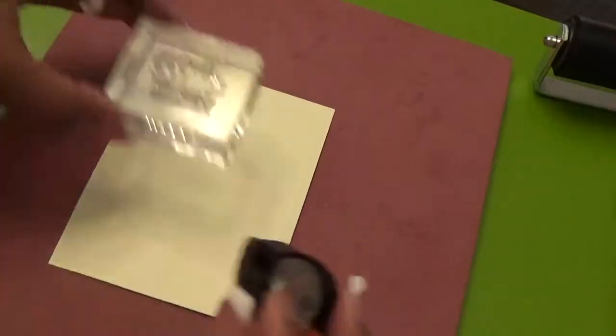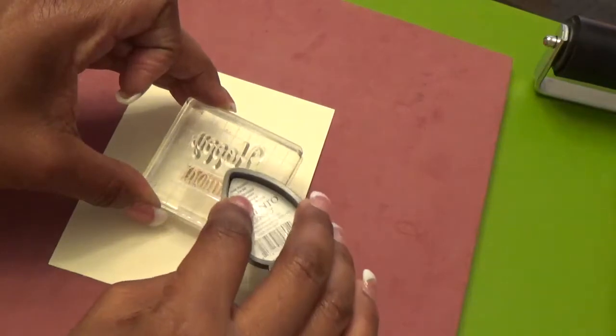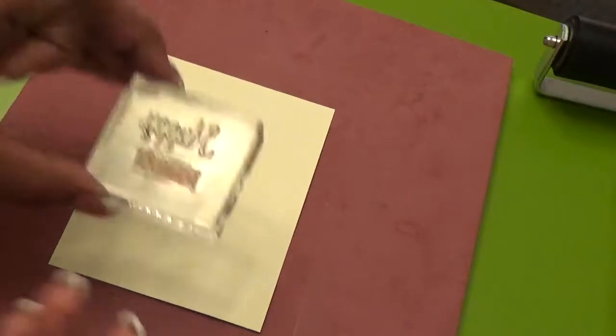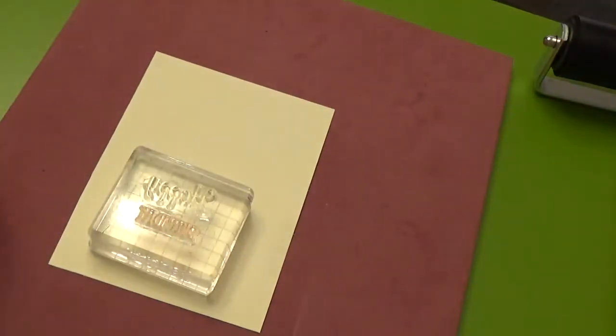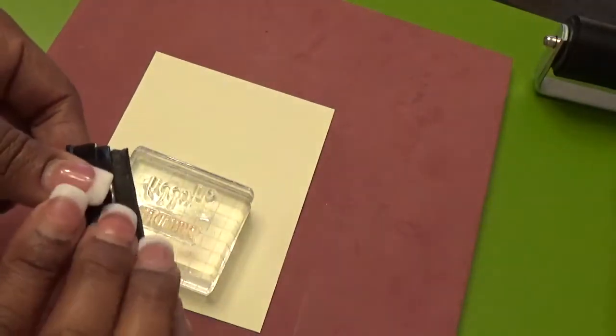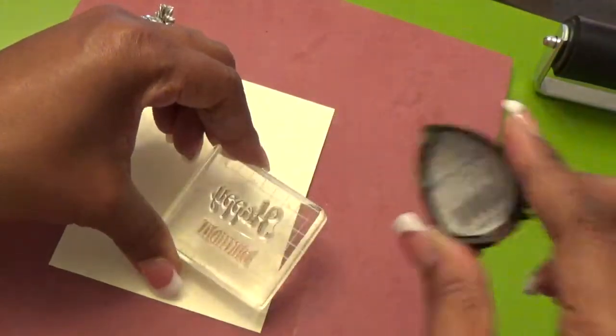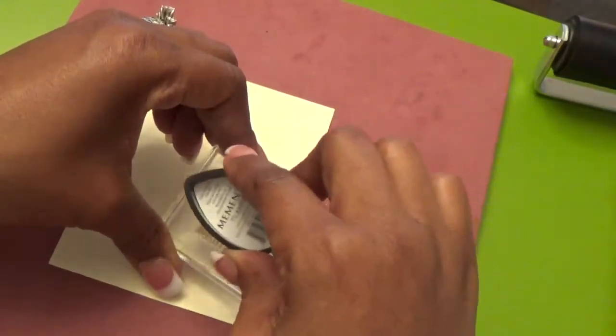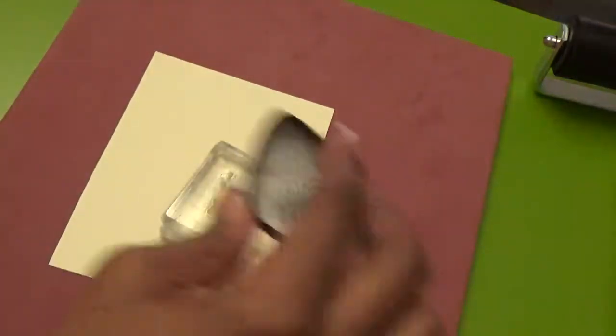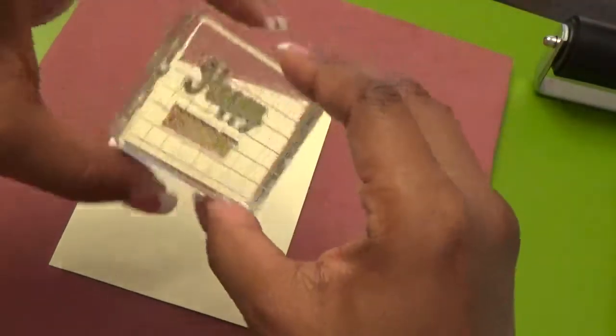You guys can't even see what I'm doing. We're going to put potter's clay on the birthday, which is the lighter color. And I'm trying not to make a mess. And we're going to put the rich cocoa on the word happy. I'm just trying to make sure I stamp it up pretty good.